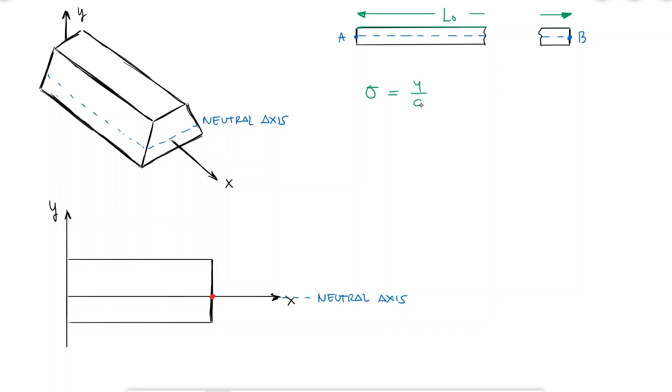As I move away from the neutral axis, meaning y is no longer zero, the stress increases linearly, and I know that for a positive moment, the top portion will be under compression, and the bottom will be under tension.